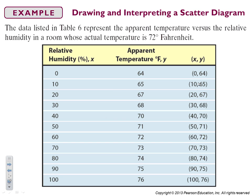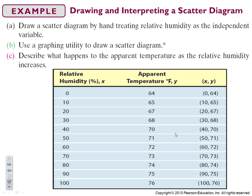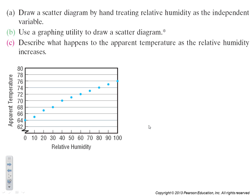So that creates these data points. We're going to draw a scatter diagram by hand treating relative humidity as the independent variable, which means it goes on the x-axis. We're going to use a graphing utility to draw the scatter diagram and then we're going to describe what happens to the apparent temperature as the relative humidity increases. So drawing a scatter diagram by hand, it's going to look like this where you have your humidity on the x-axis and your temperature on the y.